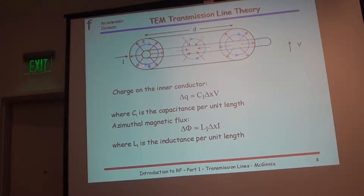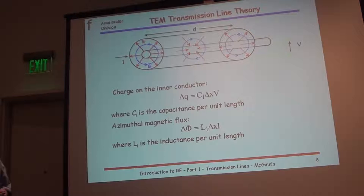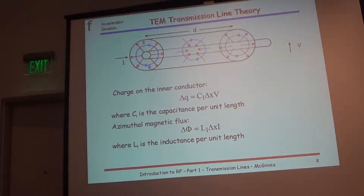The nice thing about a TEM wave is that what happens at low frequencies is the same as what happens at high frequencies. So you can put a low-frequency or even a DC signal on a coax, but you can't do that on a waveguide — you can't put a DC voltage onto a waveguide. If you have a metal conductor to close around, you can work from DC to daylight. With a waveguide, it has a frequency cutoff characteristic.